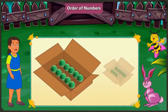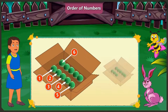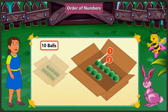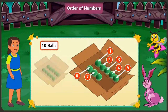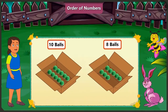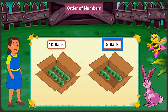One box here has 1, 2, 3, 4, 5, 6, 7, 8, 9, 10 balls and the second box has 1, 2, 3, 4, 5, 6, 7, and 8 balls. So the first box has more balls than the second box. While counting, which number comes first — 8 or 10? Yes, while counting 8 comes first, so 8 comes before 10.